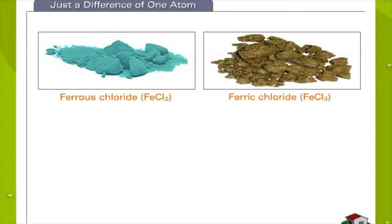Just the difference of one atom. The compounds displayed here may not look alike, but they are made of the same elements, iron and chlorine. The only difference between them is one atom. Ferrous chloride, FeCl2, has one atom of chlorine lesser than ferric chloride, FeCl3.